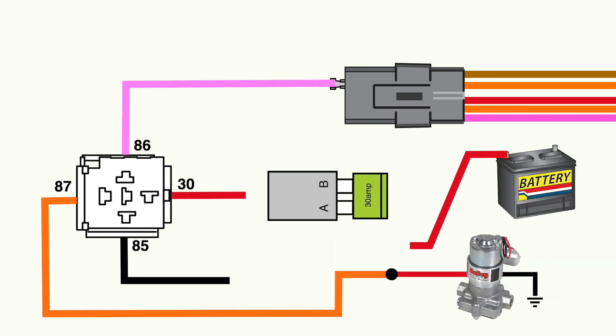Relay terminal 30 is what will receive fused battery power. Our relay kit includes a 30 amp fuse and inline fuse holder for this purpose. Finally, terminal 85 is the relay ground connection. This can be connected to a clean chassis ground junction block or the negative battery terminal itself.